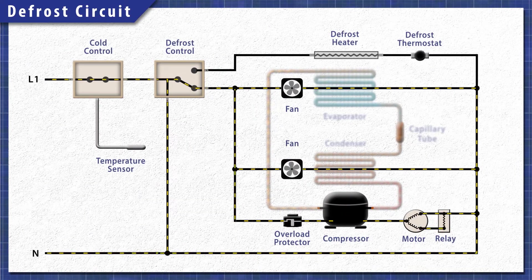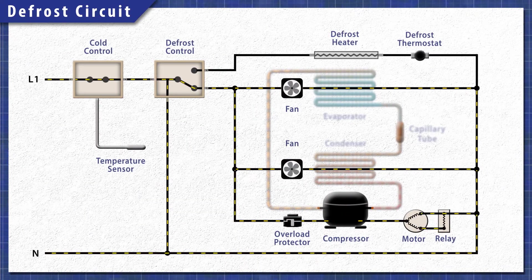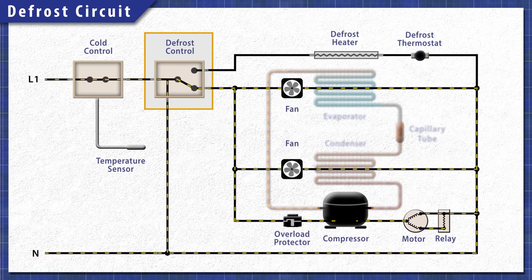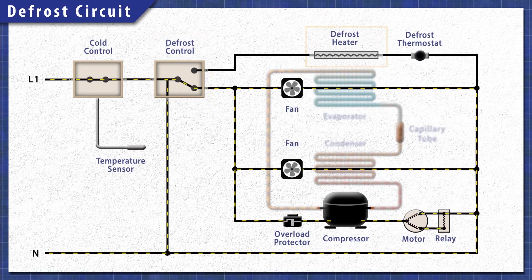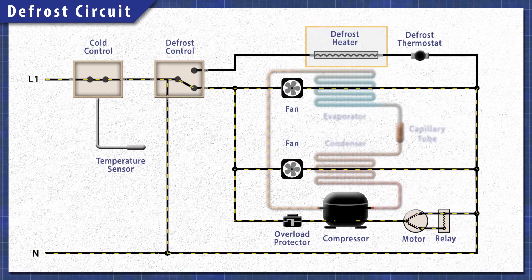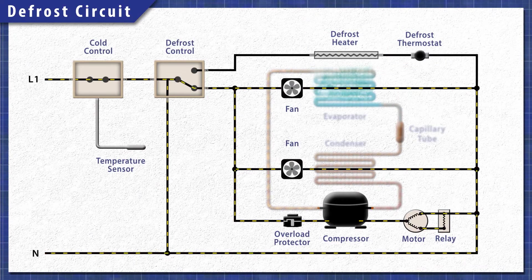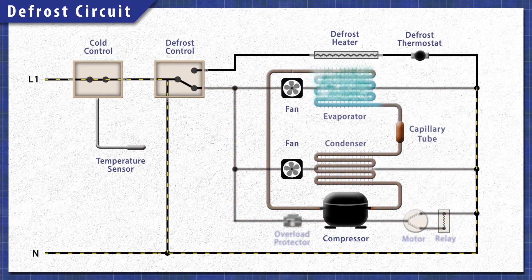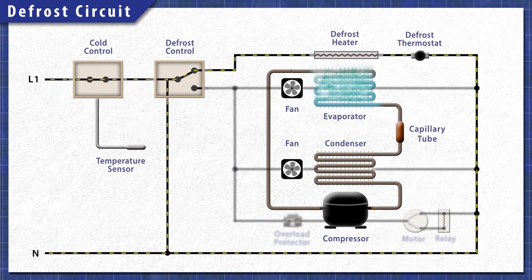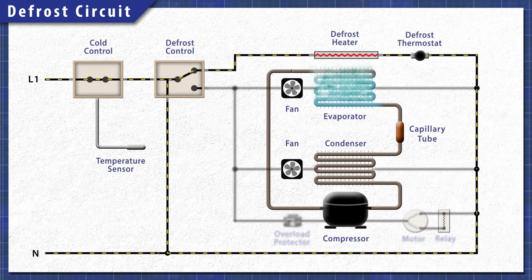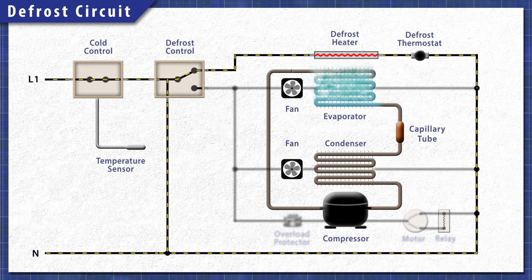Modern refrigerators have a defrost system. This includes a defrost timer or controller, a heating element, and a thermostat or thermistor. When the cycle begins, the defrost control shuts off power to the compressor and the fans. This prevents the refrigerator from cooling while the heater is active.